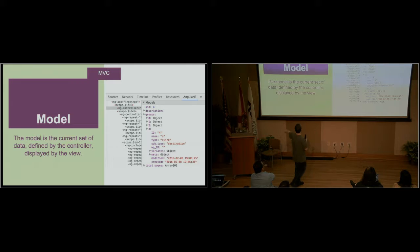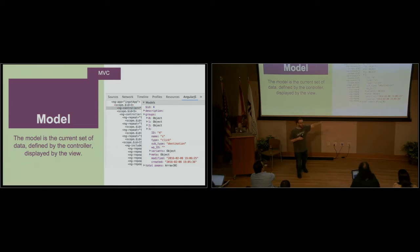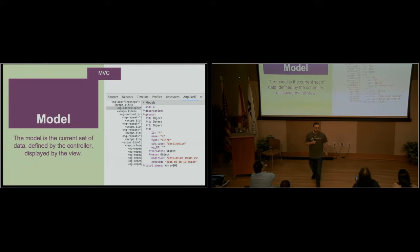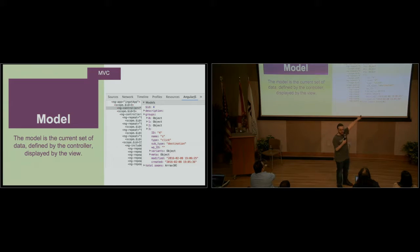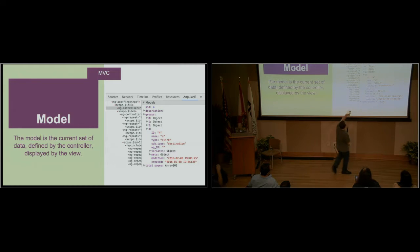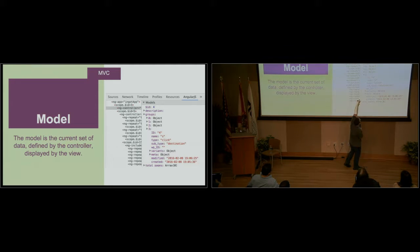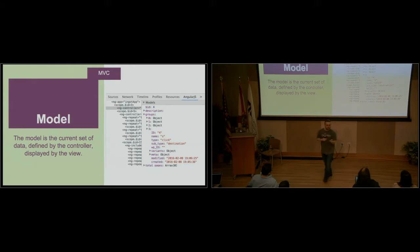The model is the current state of data. The model is kind of abstract — there's no code. This is the current state of the application. This screenshot right here is in Chrome Inspector. I have this cool little add-on that lets me inspect the scope of AngularJS. So right now, what is the current state of my application? I have this array of objects and you can drill down into it. This is the model — this is the current data that the controller can put into the view.